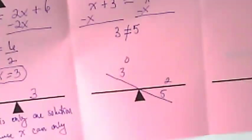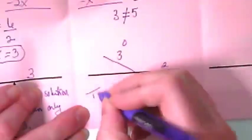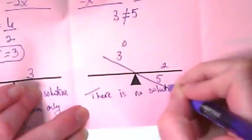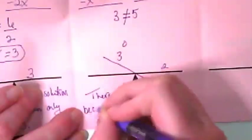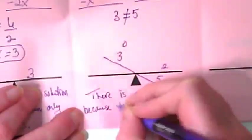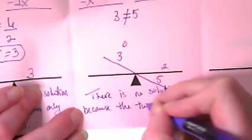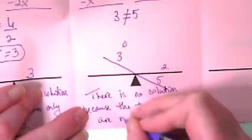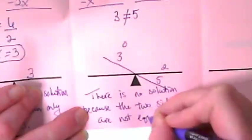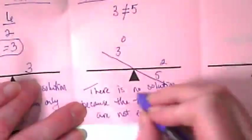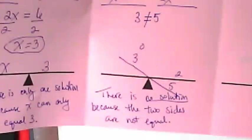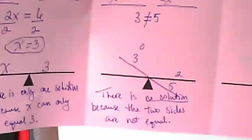Either way, the left side is lighter than the right side, and they're not equal to each other. There is no solution because the 2 sides are not equal.